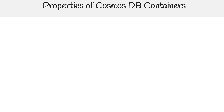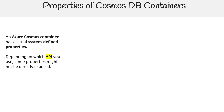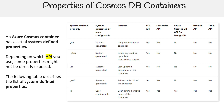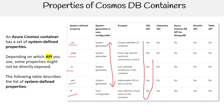The properties of Cosmos DB containers include system-defined properties. Depending on which API you use, some properties might not be directly exposed. Examples of system-defined properties include underscore rid, underscore e-tag, underscore TS, underscore self, and ID. Notice that these are all system-generated, while ID is user-configurable. It looks like this applies mostly to the SQL API, with IDs present on all of them.